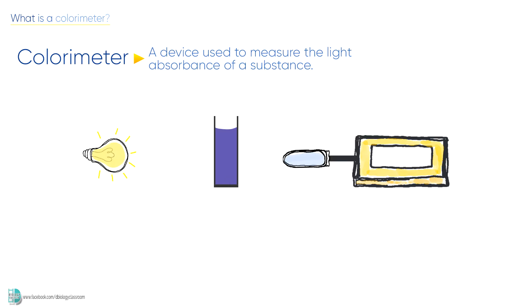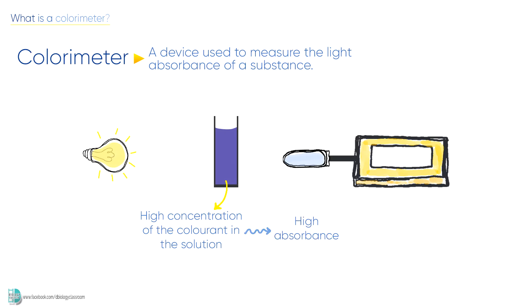The higher the concentration of color in the solution, the higher the absorption of light. Less light passes through the solution and is detected by the light detector, and you will get a larger absorbance value.